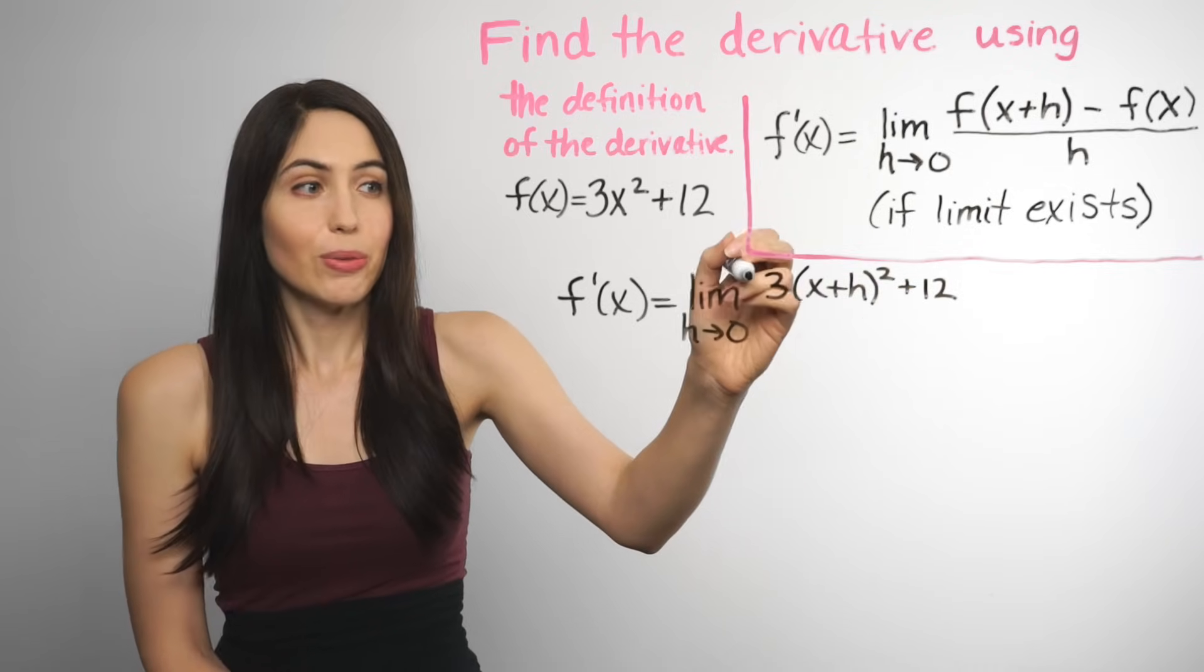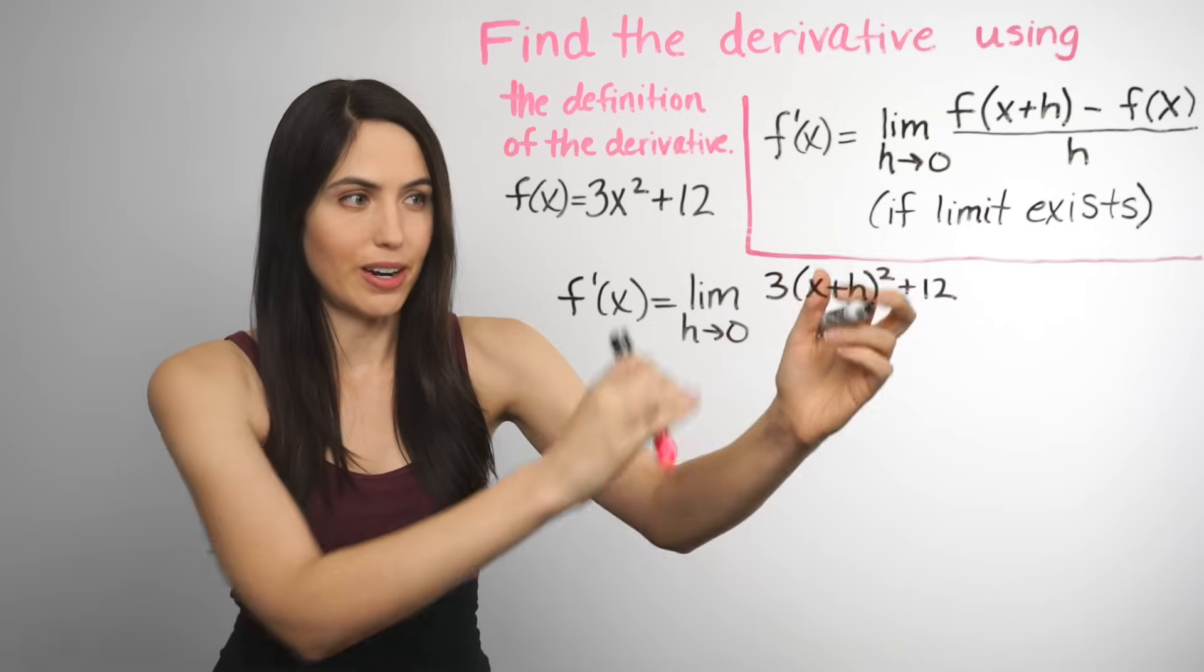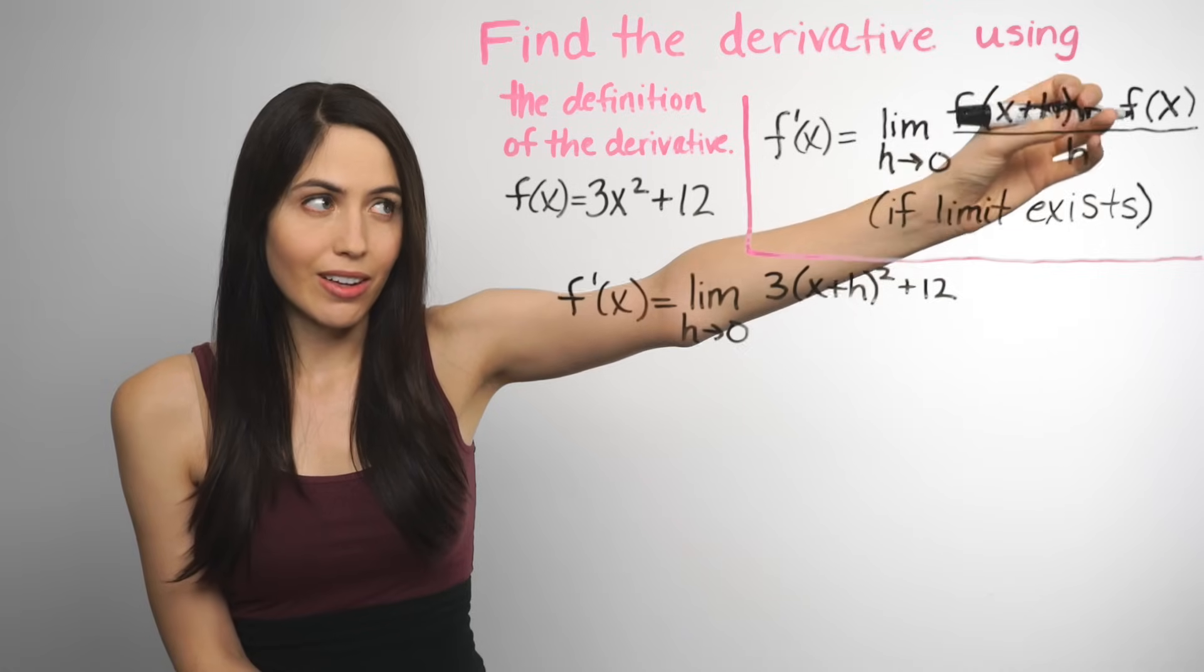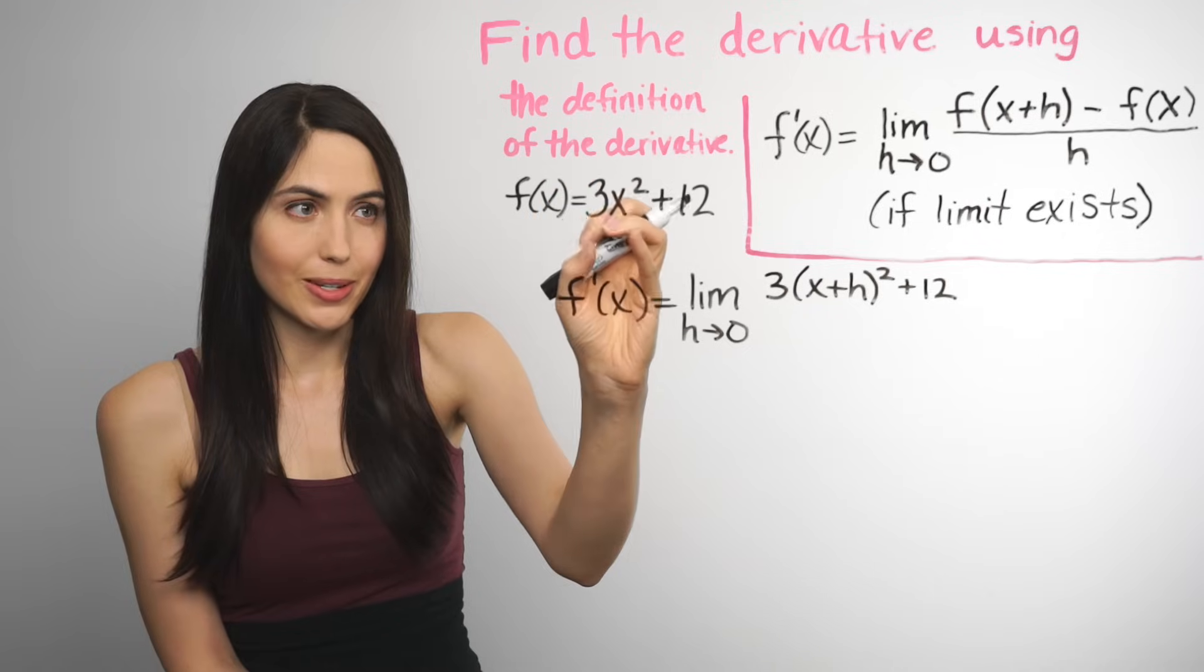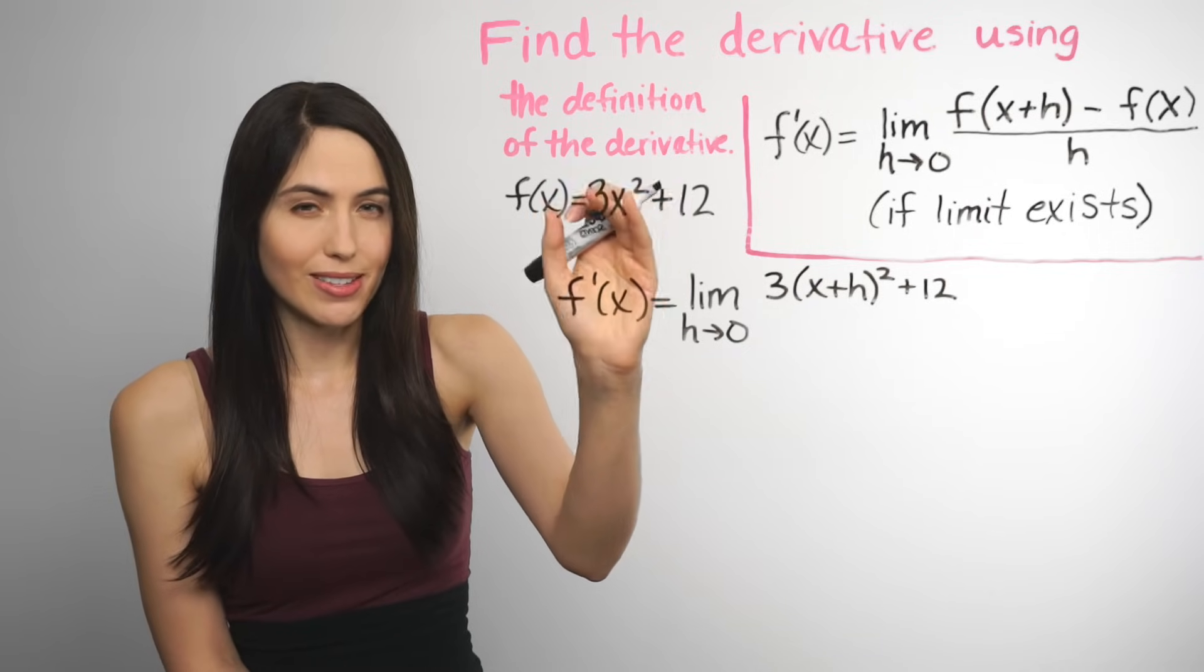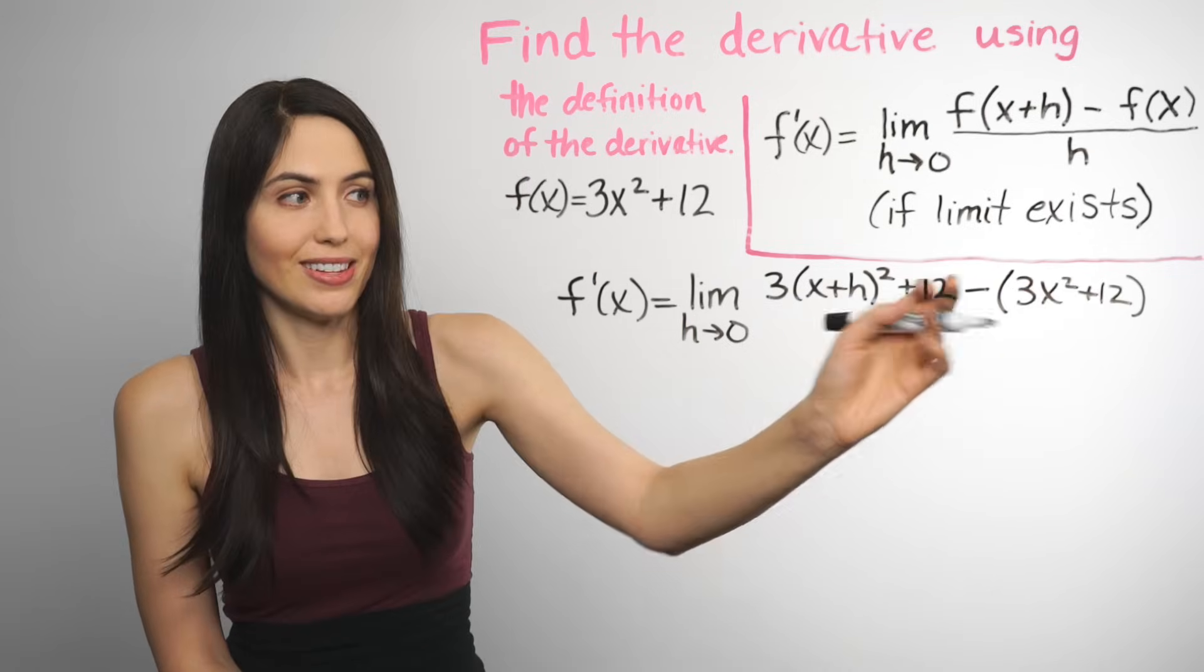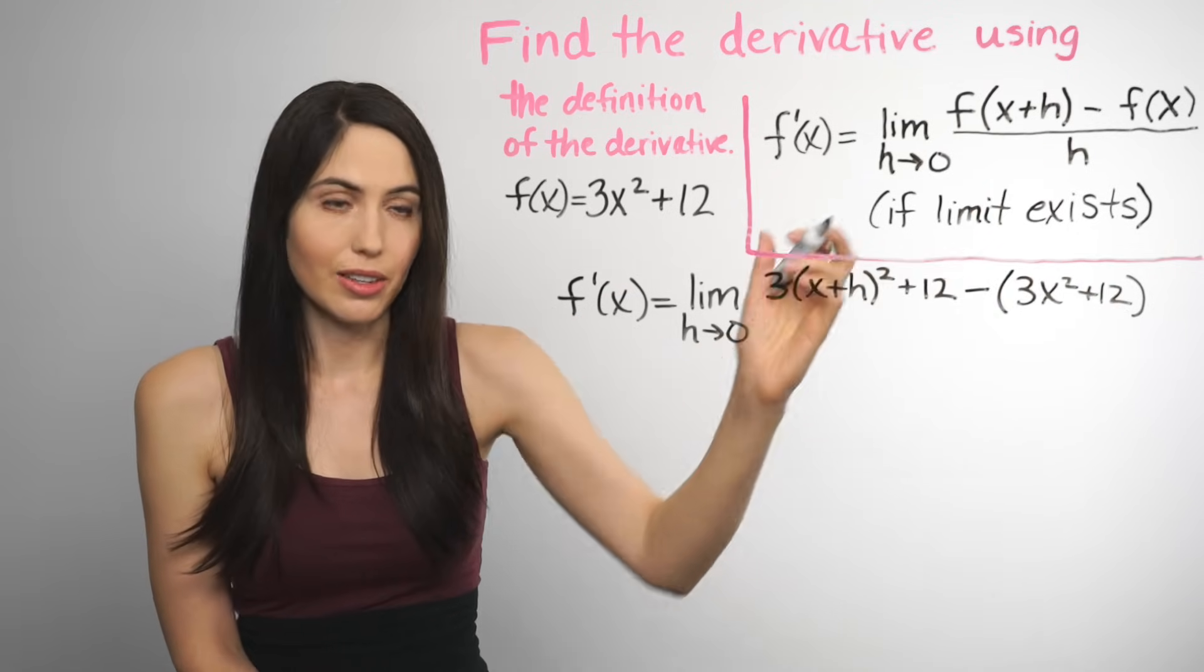Which looks like this, 3 times (x+h) squared, instead of x squared, plus 12. Then you subtract f(x), but you're subtracting all of f(x) just as is, however the f(x) looks. But make sure you use parenthesis when you do subtraction so you get the right signs. So we have minus all of f(x), and then it's all over h in the formula.